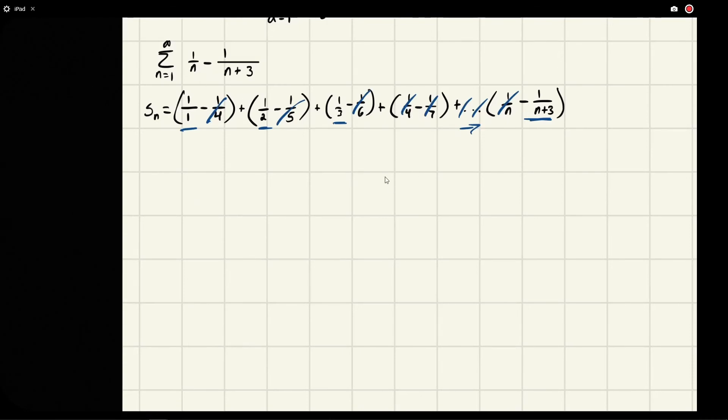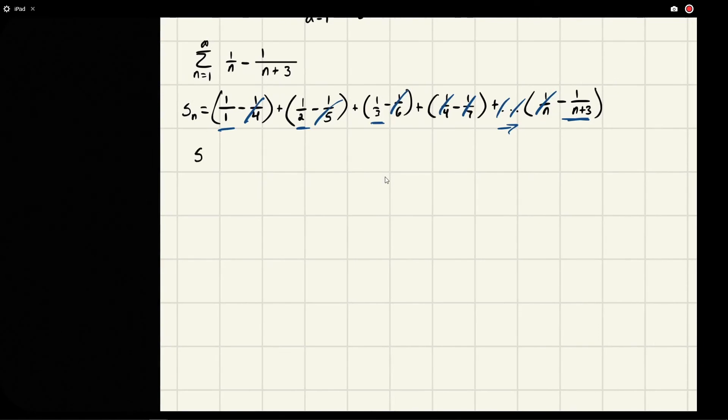Okay, moving along. We get our partial sum sequence, a partial sum equal to 1 plus 1/2 plus 1/3 minus 1 over n plus 3.